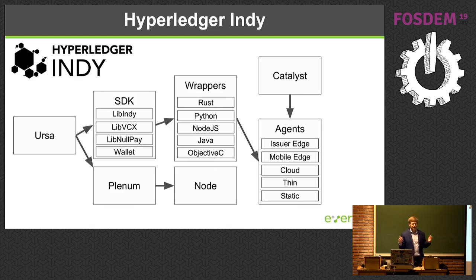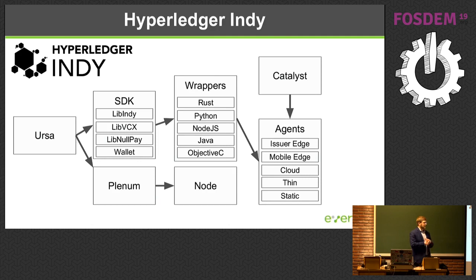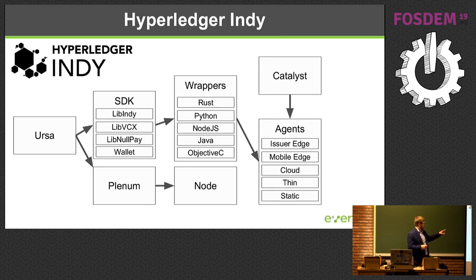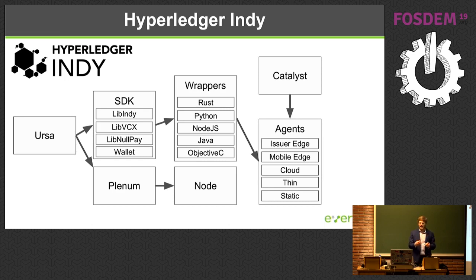The network consists of 25 consensus nodes, plus other peers that can provide read-only access. To interact with the network you use an SDK. LibIndy knows how to talk to the network. VCX is for Verifiable Claims Exchange — it handles talking to other agents in the ecosystem to provide credential exchanges. LibNullPay is a stub API for payment exchange, because often you want to pay for credentials as well as pay the fees on the network for doing consensus. There's also a wallet for containing these credentials, and a variety of language wrappers so you can consume the SDK in the language of your choice.